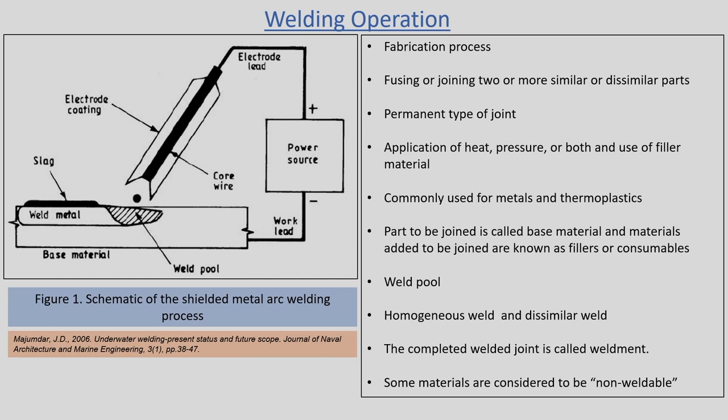Welding is an important manufacturing process. It is a fabrication process which is generally used to join the materials together for various parts, for various sub-assemblies in product development. When we fuse or join two materials together — it may be similar materials or dissimilar materials — by using a permanent joint. In welding operation we are joining either similar or dissimilar materials and the type of joint is a permanent joint. In fabrication we can also join two different materials temporarily by using fastening methods such as screws and nuts or rivets.